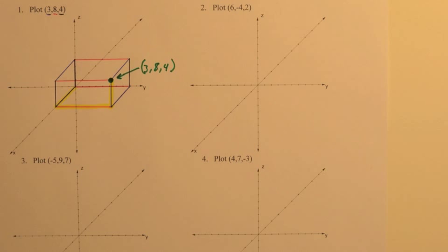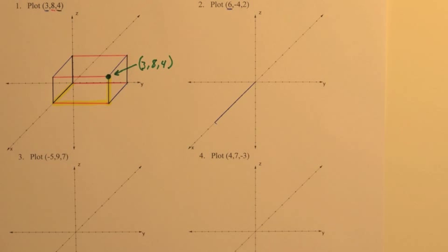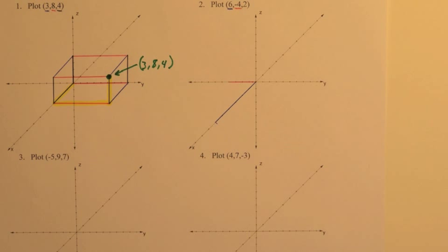So, 6 refers to the x-direction. Since it's positive, we're moving 6 units forward. Next, we have a negative 4 for the y-coordinate, and that means we're moving 4 units in the left direction.